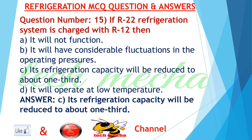Question number 15: If an R-22 refrigeration system is charged with R-12, then A. it will not function, B. it will have considerable fluctuations in the operating pressures, C. its refrigeration capacity will be reduced to about one-third, D. it will operate at low temperature. Answer: C. its refrigeration capacity will be reduced to about one-third.